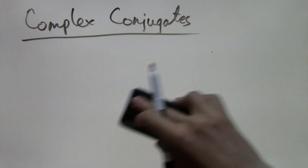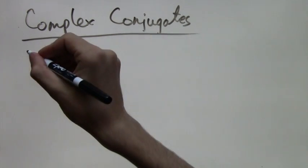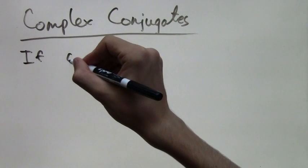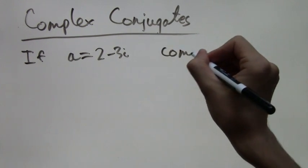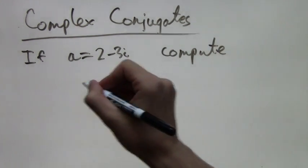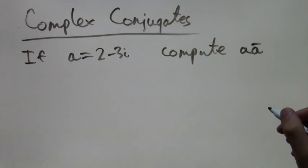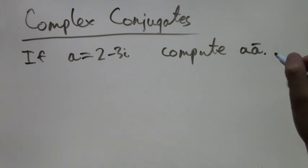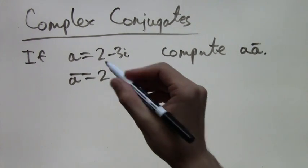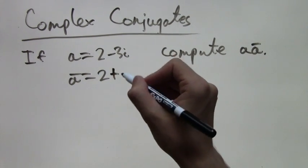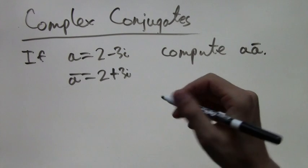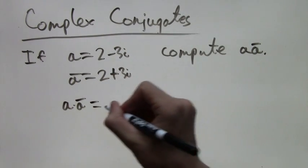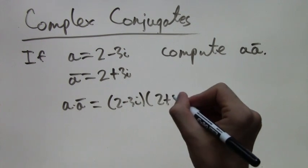One of the most interesting things about complex conjugates is multiplying them. For example, let a equals 2 minus 3i. We want to compute a times a-bar. First we need a-bar, which is 2 plus 3i, because we switch the minus to a plus. So a times a-bar equals (2 minus 3i) times (2 plus 3i).